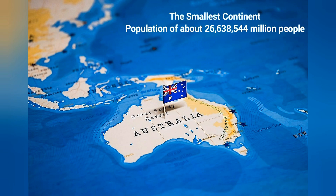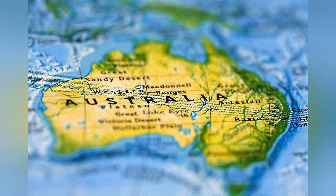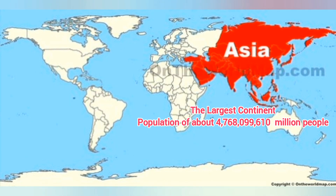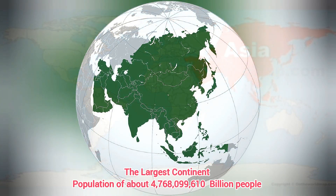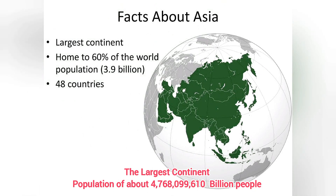Of the 7 continents, Australia is the smallest of them all, with a population of about 27 million people. However, the largest continent is the continent of Asia, with a population of about 4.7 billion people. Asia has about 48 countries.